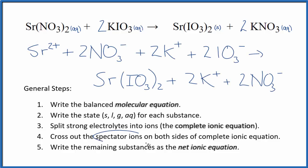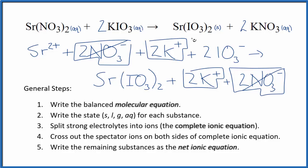So now we can cross out spectator ions. They're on both sides of the complete ionic equation. So on the top we have reactants, down here we have our products. In the reactants here, we have these two nitrate ions. We also have those in the products. These are spectator ions. We cross those out. We have two potassium ions, reactants, two potassium ions, products. Spectator ions, cross them out.